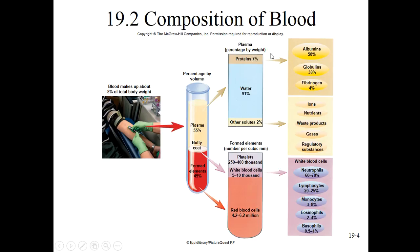In our plasma proteins, we have three primary classes: albumins, globulins, and fibrinogen. The other solutes include ions, nutrients, waste products, gases, and regulatory substances.